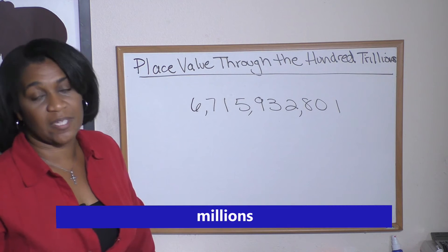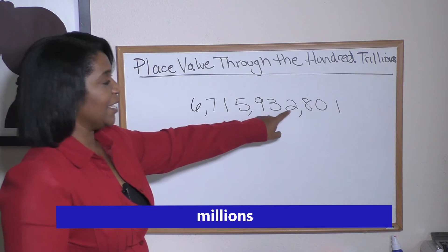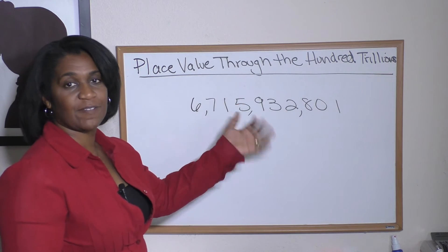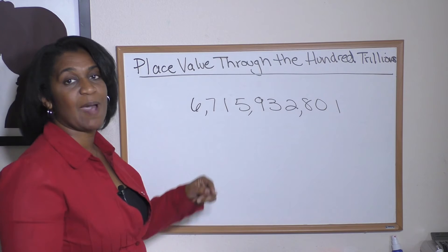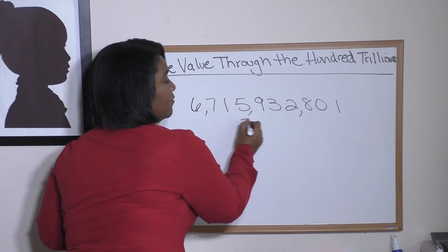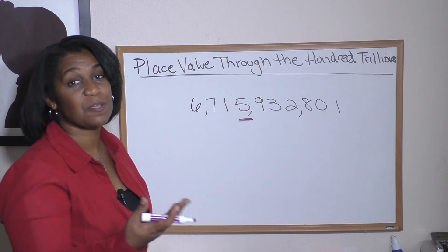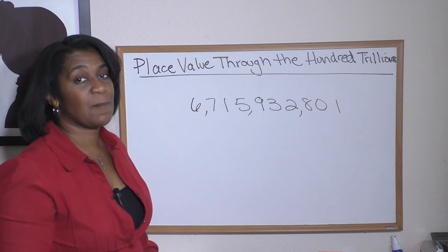But if I asked you what number is in the million spot, well, remember, let the commas help you. So when we hit this comma, we know the number right in front of it is the thousands. And then we hit the next comma, we know we change to the millions. So five is in the millions category or millions place value.